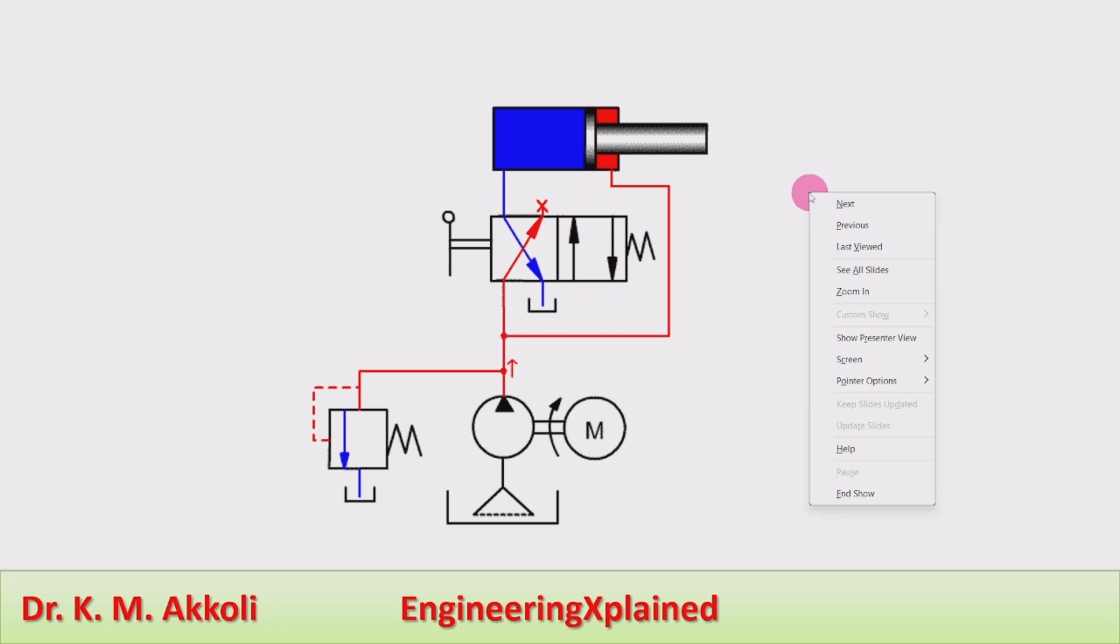When the direction control valve is in its left envelope, the fluid flowing from the pump flows to this direction control valve where one port is blocked. Therefore, there is no flow through the direction control valve.